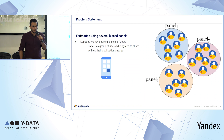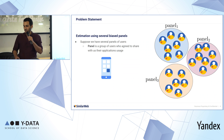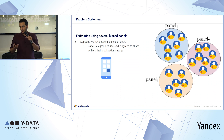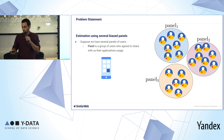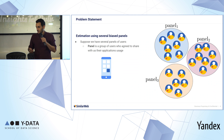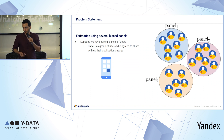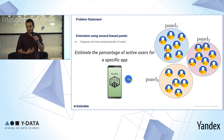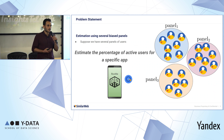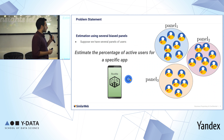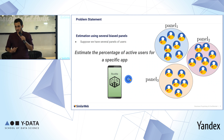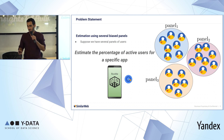Problem statement. Imagine you have several panels of users. Each panel is a group of users who agreed to share with us their application usage. So here are panel one, two, and three. We want to estimate the percentage of active users for a specific app — in this fictional example the app is called Rumi, I just made it up — so we want to estimate the percentage of active users for this app.